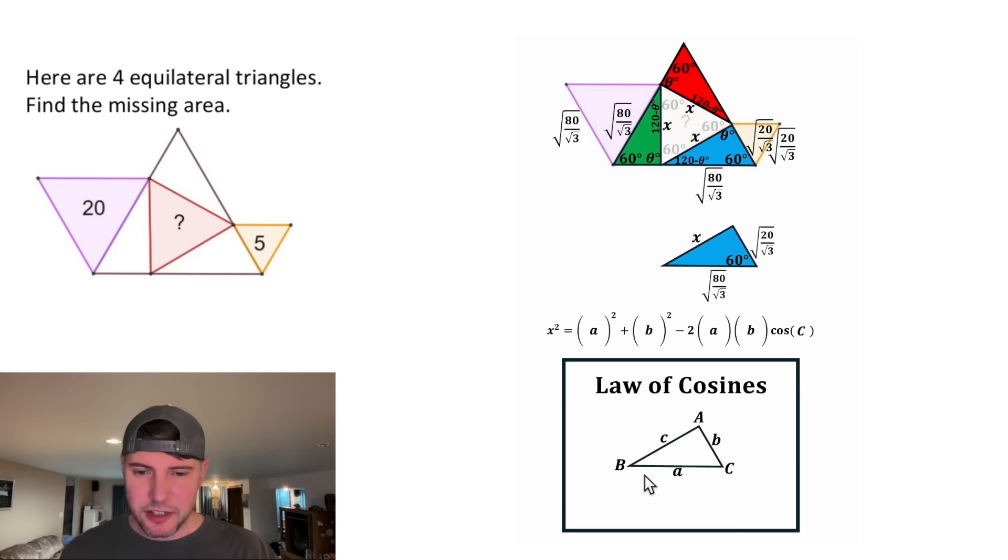For the a, that's going to be the side on the bottom. That's the square root that has the 80 in it. So we'll put that in the a there and that in the a there. And then the b is the other side length. That's going to be the square root that has the 20 in it. We'll put that there and that there. And then cosine of capital C. Capital C is the size of this angle, which is 60 degrees. Now we don't really need these notes anymore.